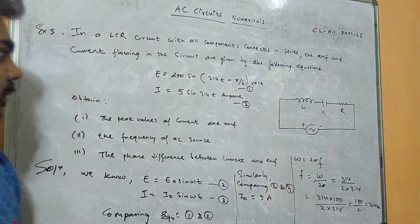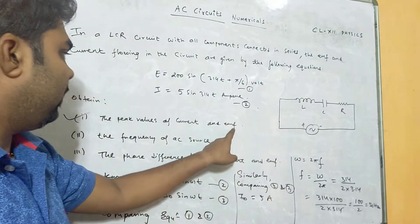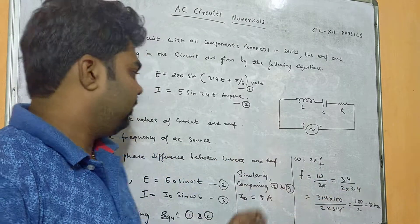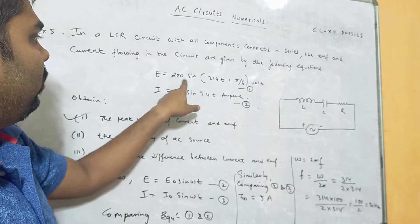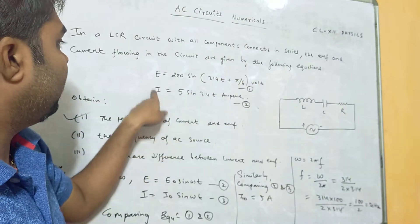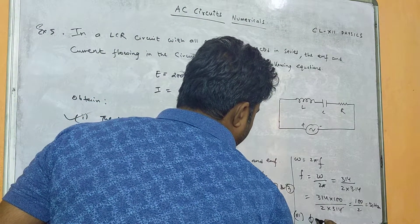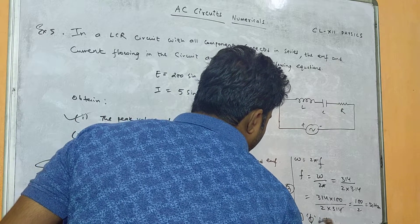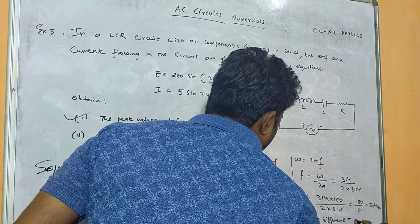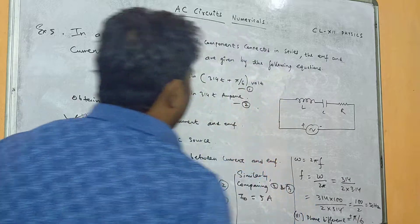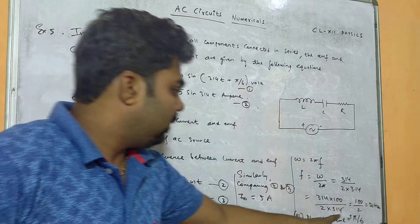So the frequency of the AC source is 50 hertz. Next, we find the phase difference between current and EMF. The current is 5 sin 314t and voltage is 200 sin(314t + π/6). The phase difference is π/6. You can see that voltage is leading and current is lagging, so voltage is leading current by an angle of π/6.